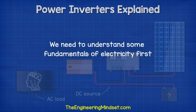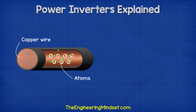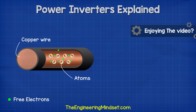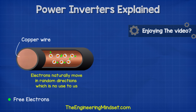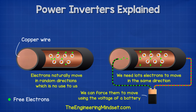To understand how an inverter works, we first need to understand some fundamentals of electricity. Inside a copper wire, we find copper atoms. These have electrons which can move to other atoms. These are known as free electrons because they are free to move around. They will randomly move in all directions, but this isn't of any use to us. We need lots of electrons to move in the same direction, and we do that by applying a voltage difference across the wire.